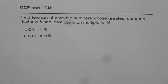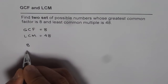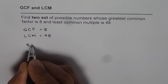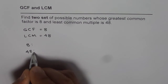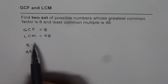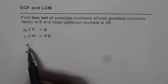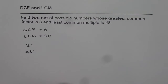We want two numbers. Now one set of numbers is absolutely clear, and that is the numbers 8 and 48. Always, whenever you are given the least common multiple and greatest common factor, two numbers will be the numbers mentioned there itself.